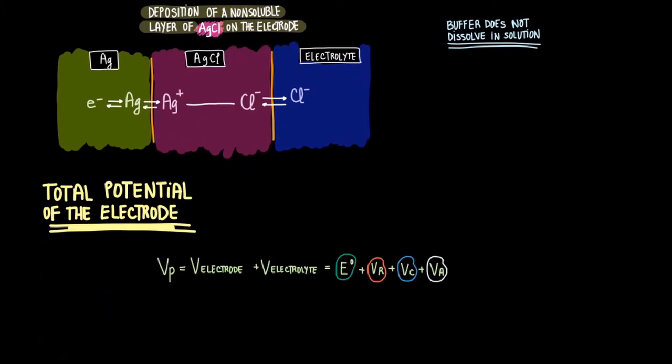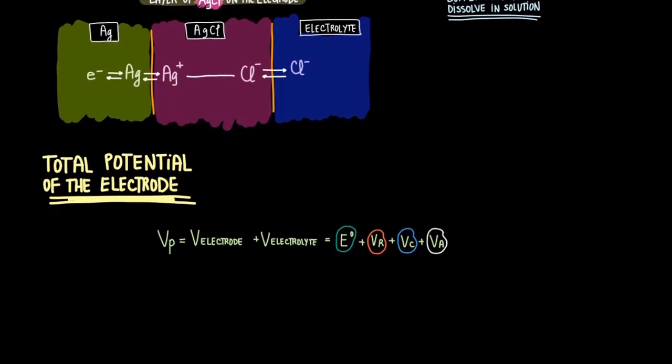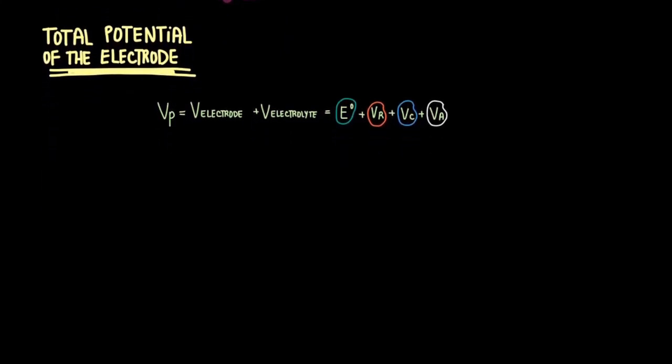This calculation involves E, the half cell potential, VR, the ohmic potential overpotential, VC, the concentration overpotential, and VA, the activity overpotential. Let's now explain what these mean.